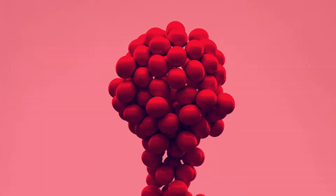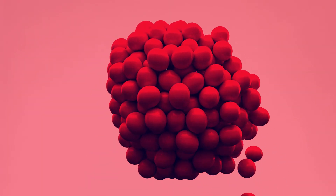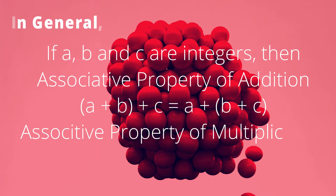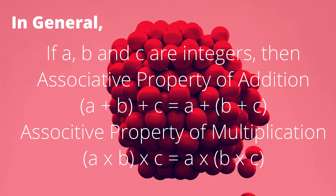So in general, if A, B, and C are integers, then the associative property of addition states: (A plus B) plus C equals A plus (B plus C). While in the associative property of multiplication: (A times B) times C equals A times (B times C).